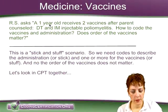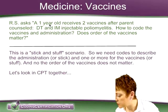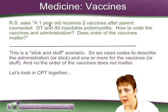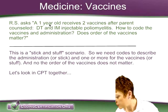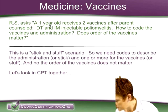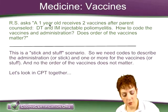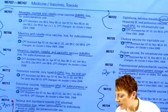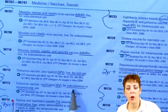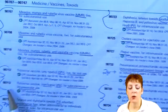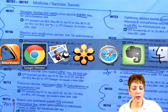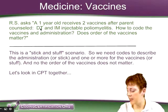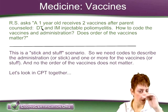For poliomyelitis — 90712 and 90713. You can see 90712 is live for oral use, and 90713 is sub-Q. Since the route of administration was an injection, it has to be 90713. You do the same thing for the DT — diphtheria and tetanus. So that's stick and stuff — hopefully that will help you remember.